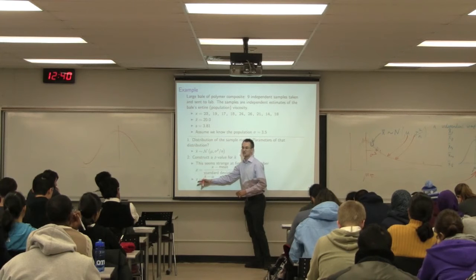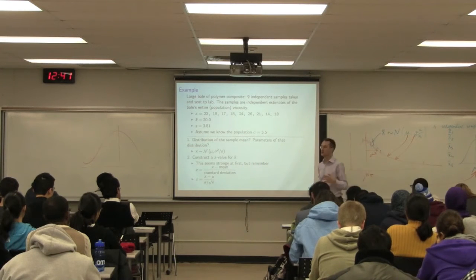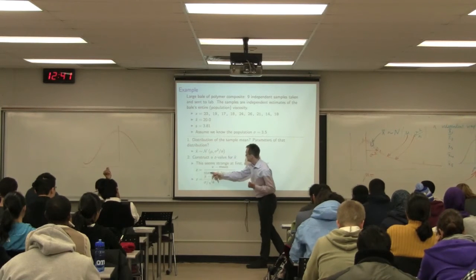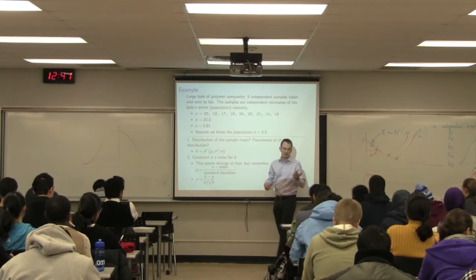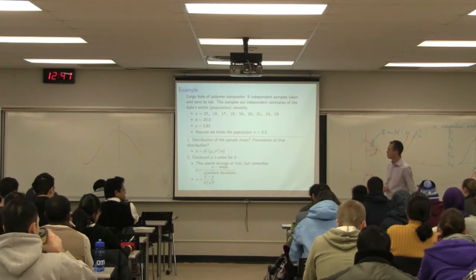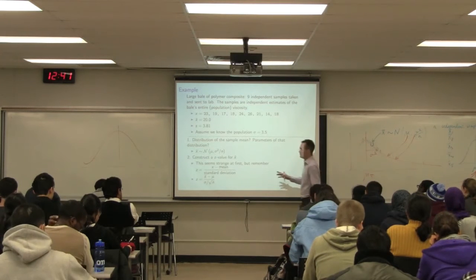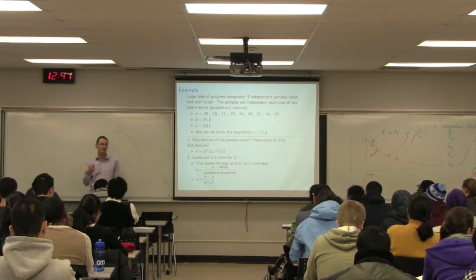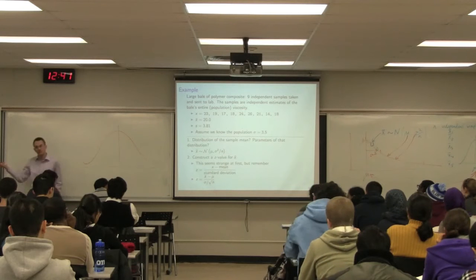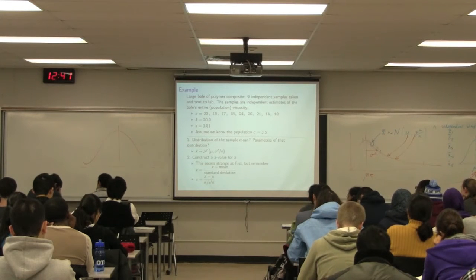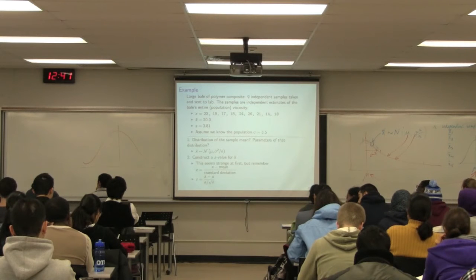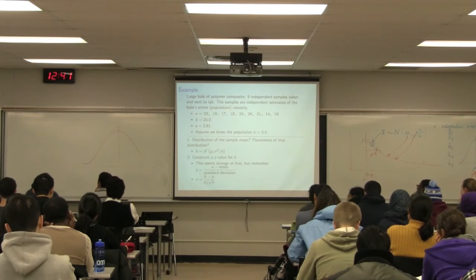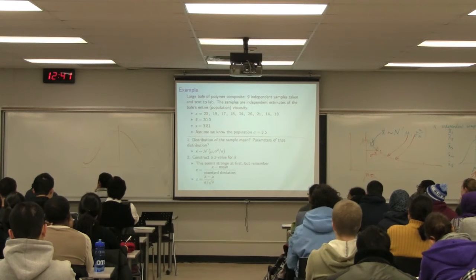We construct the z value for x-bar. Since x-bar comes from a normal distribution, I subtract the mean mu and divide by sigma over root n — the standard deviation given by the central limit theorem. So z comes from the normal distribution with mean 0 and standard deviation 1. After standardization the mean is 0 and the variance is 1.